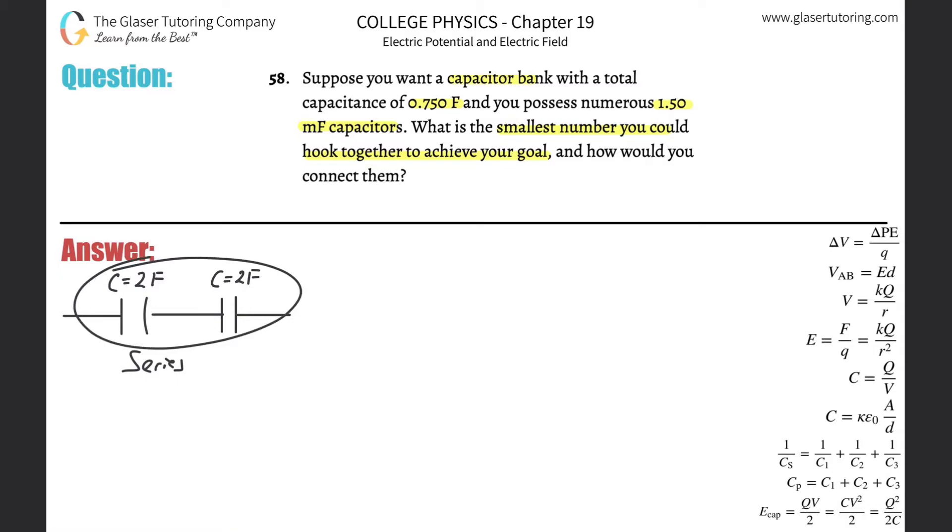If this is series, what's the total capacitance? You'd have to use the series formula: 1 over the total capacitance in series equals 1 divided by the first capacitor plus 1 over the second capacitor plus 1 over the third, etc.